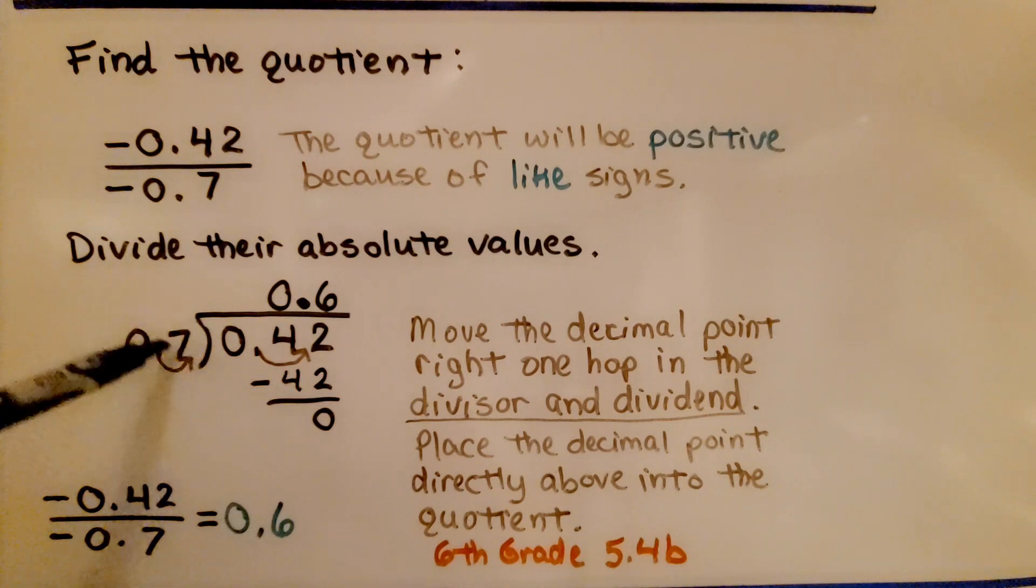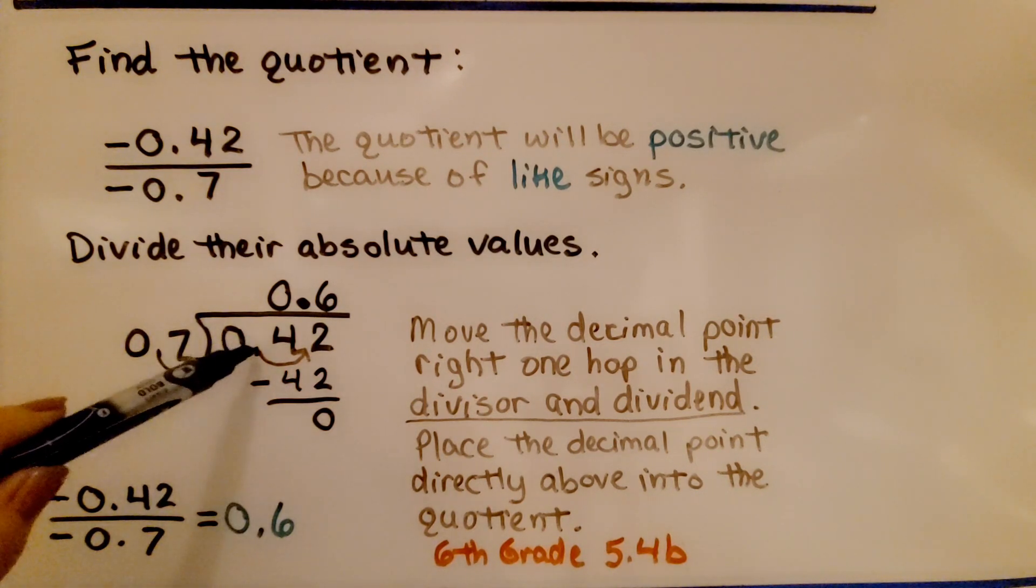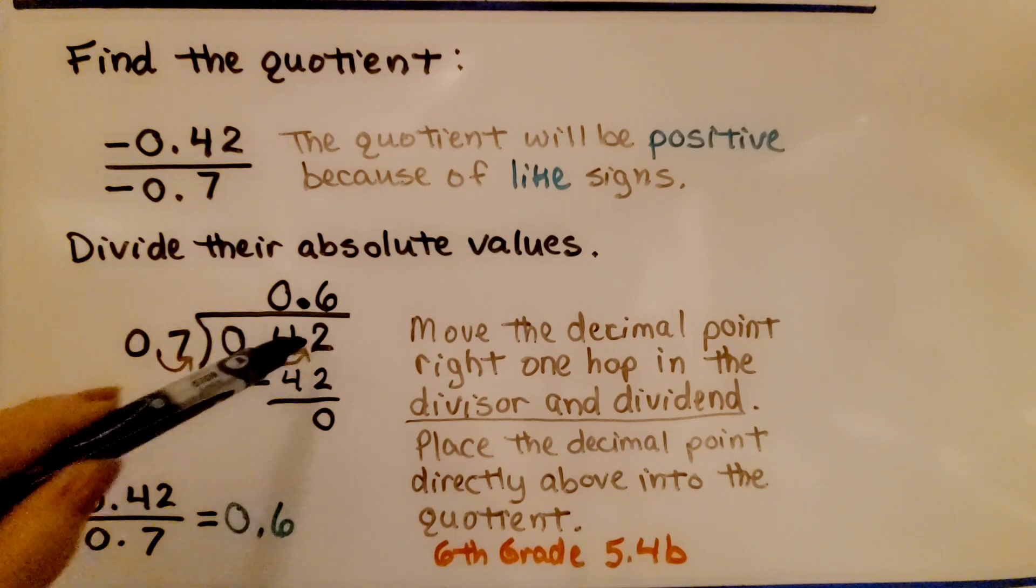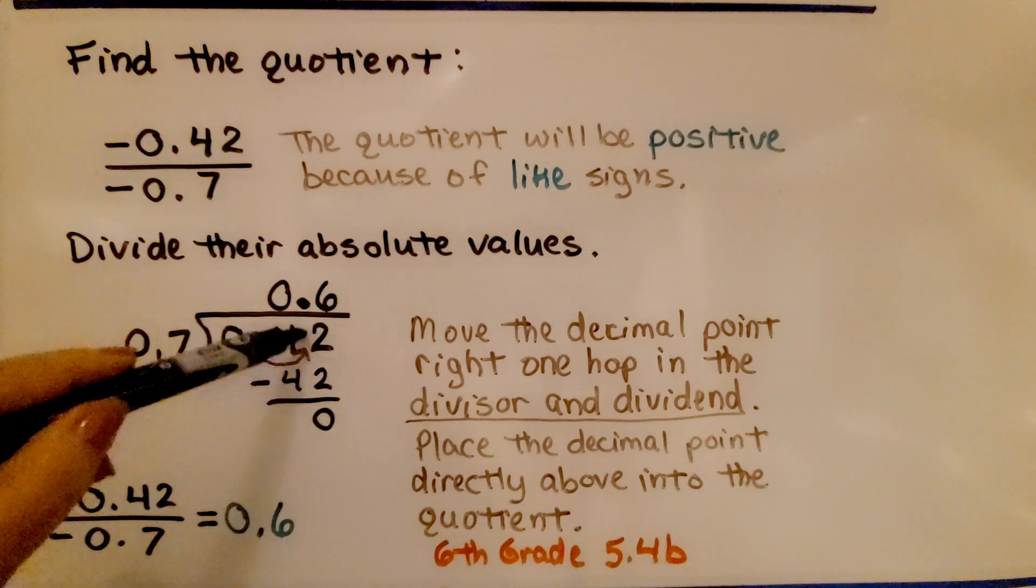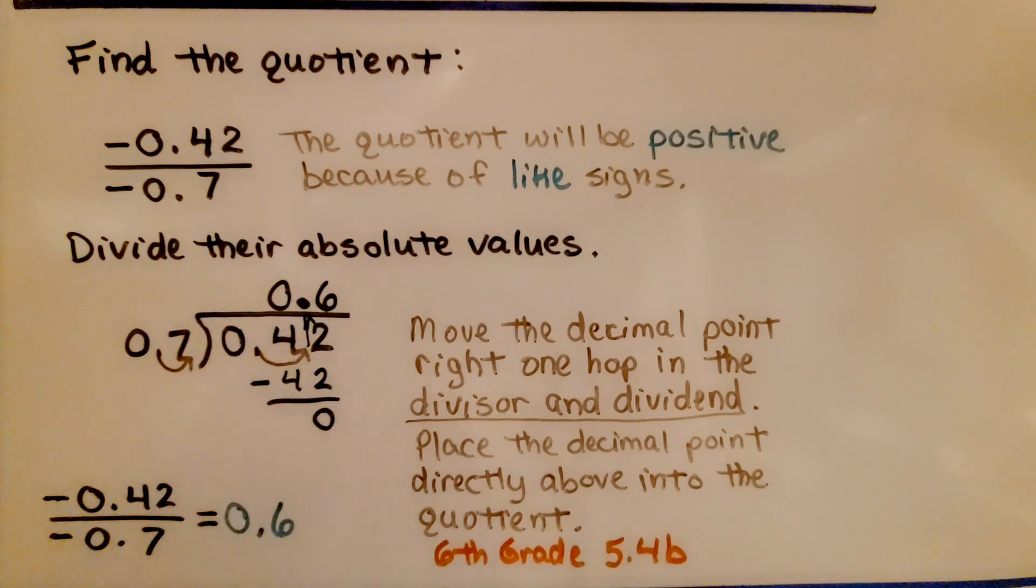That means we have to move this decimal over one hop. And then the decimal point goes straight above here. We get a positive 0.6.